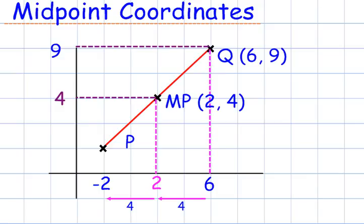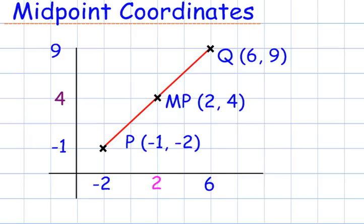9 and 4 have a gap of 5, and so I need a gap of 5 on the other side of 4, which will give me minus 1. And so, the midpoint of 2, 4 will give me a point of P of minus 1, minus 2.